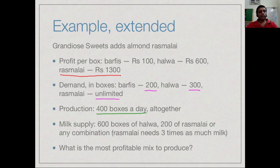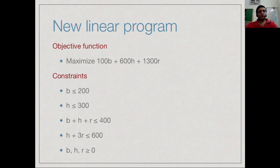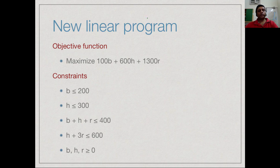Now we have an extra constraint which is in terms of what we can do with the milk that we get. With the milk that we get, we can either make 600 boxes of halwa in a day or 200 of rasmalai or any combination of this. So effectively, a box of rasmalai requires 3 times as much milk as a box of halwa. So now again, given these constraints, we want to find out what is the most optimum production schedule that we should impose on our sweet shop.